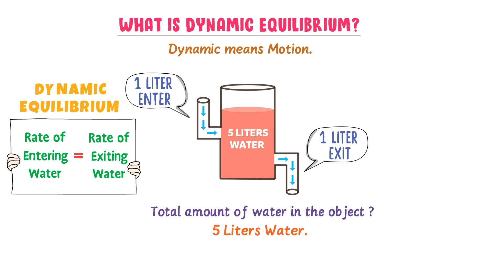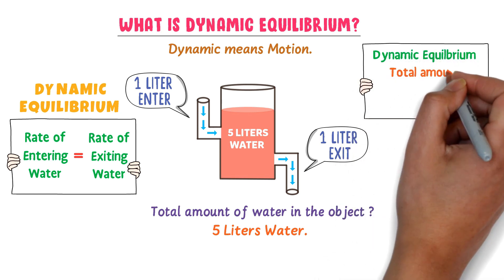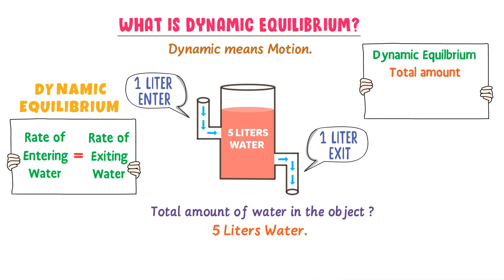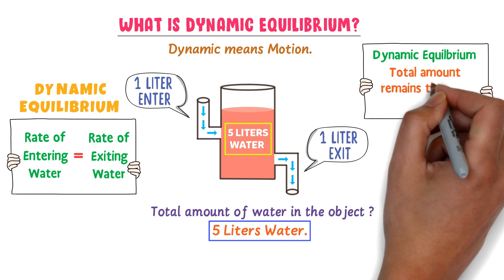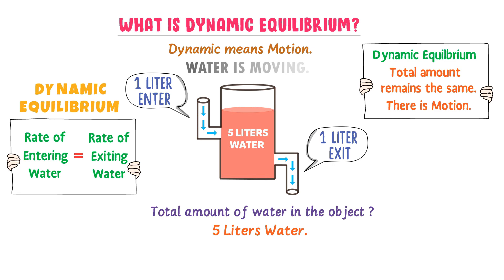To summarize this whole concept, we learn that if something is in dynamic equilibrium, the total amount — like 5 liters of water — remains the same. But still there is motion, like the motion of entering and exiting of water. So note down this fundamental concept of dynamic equilibrium.